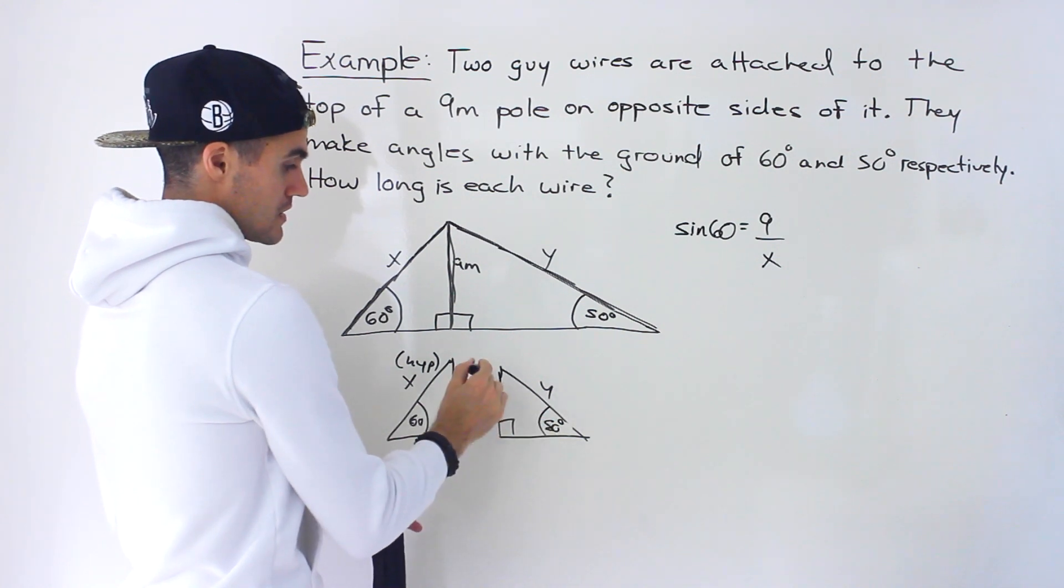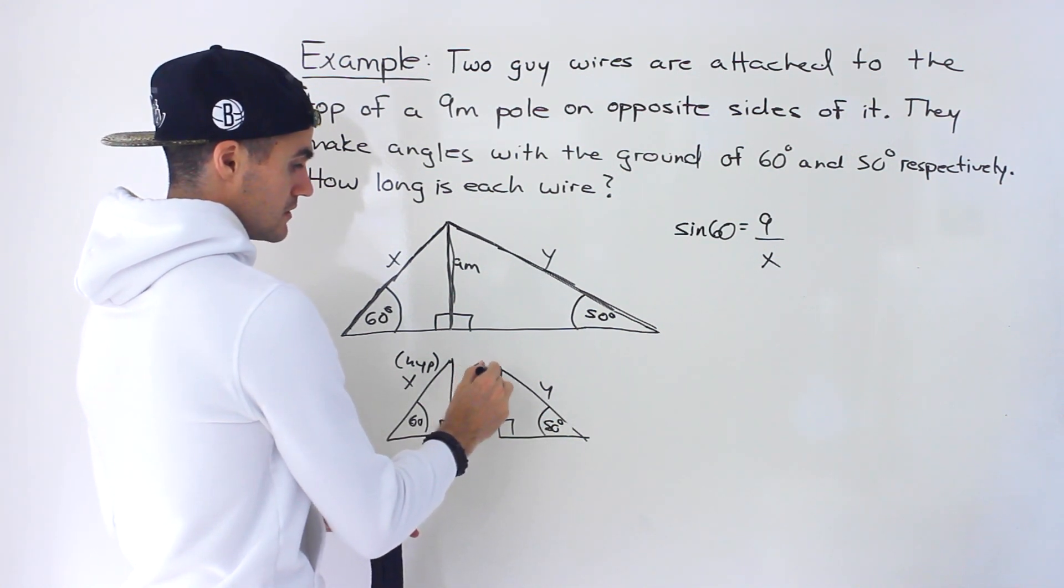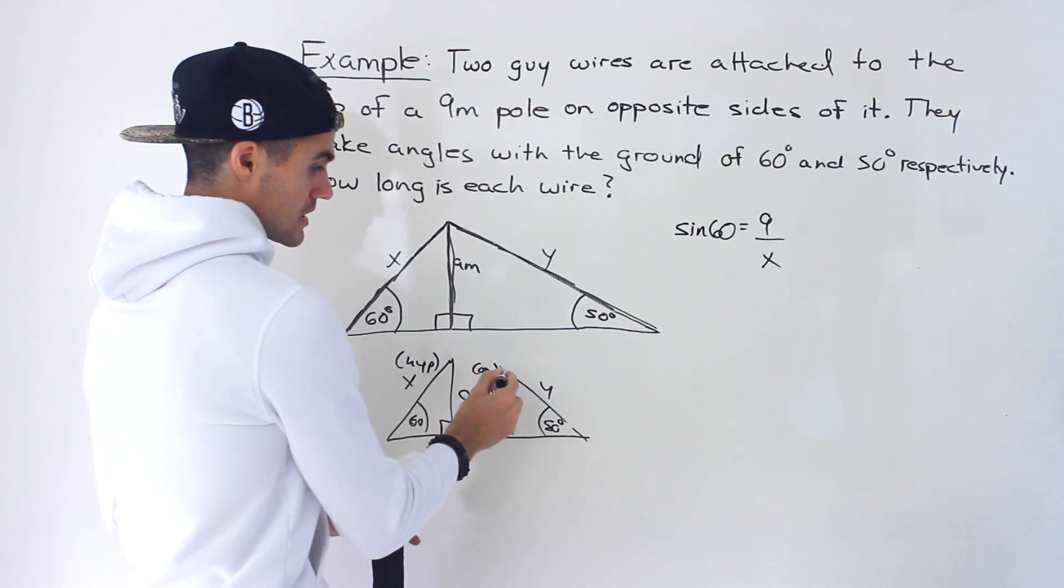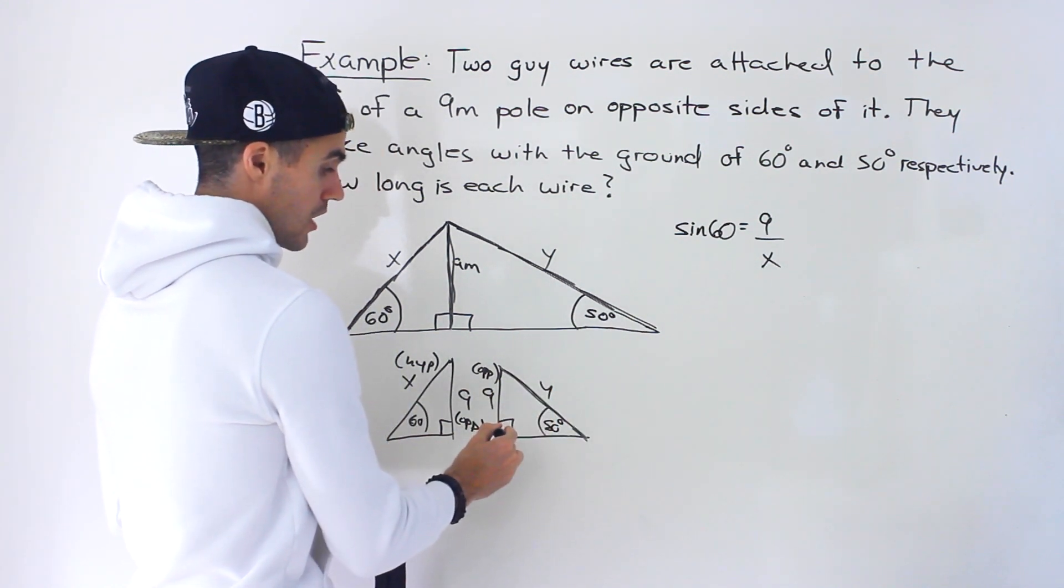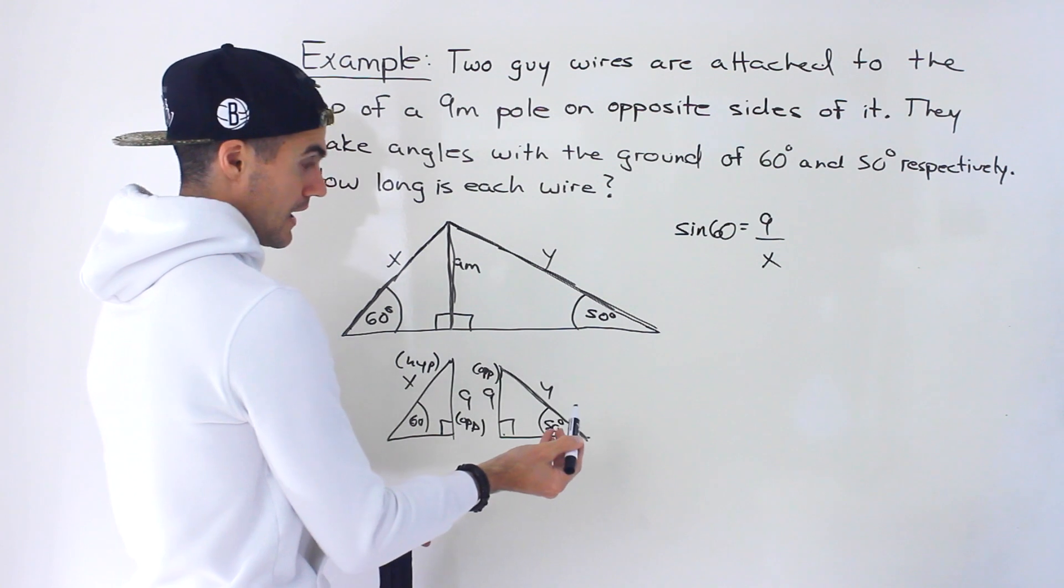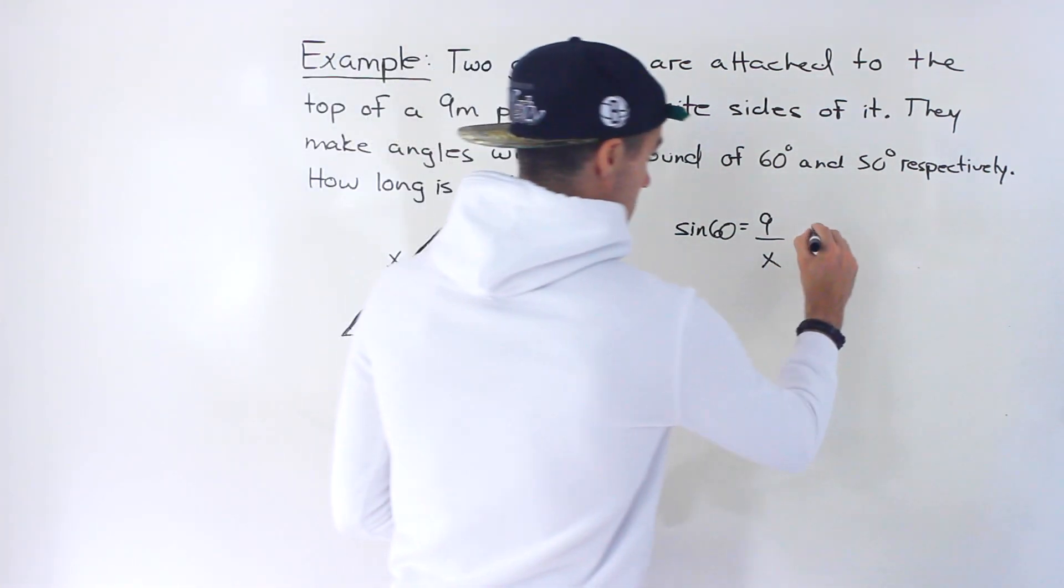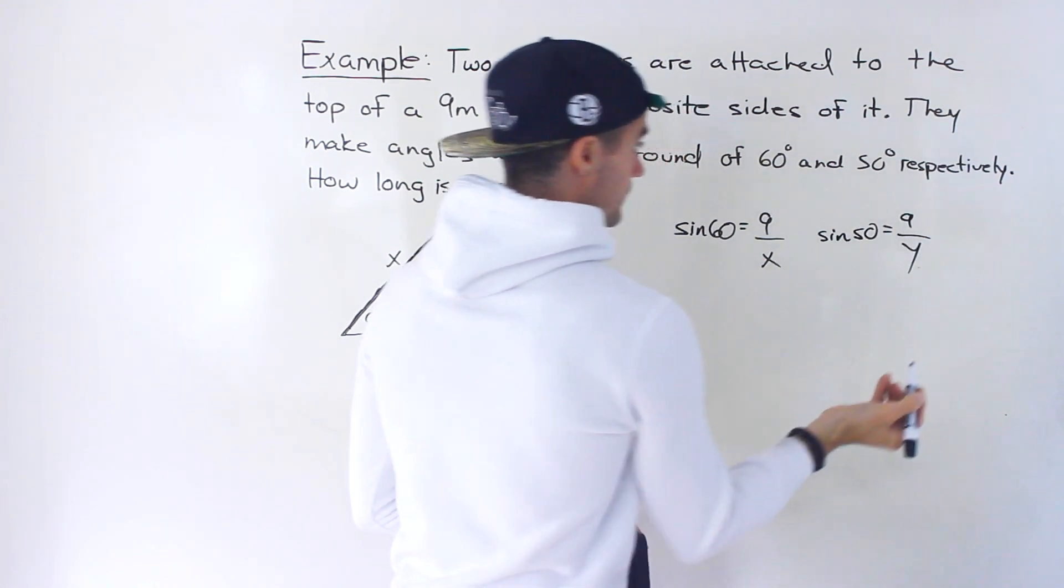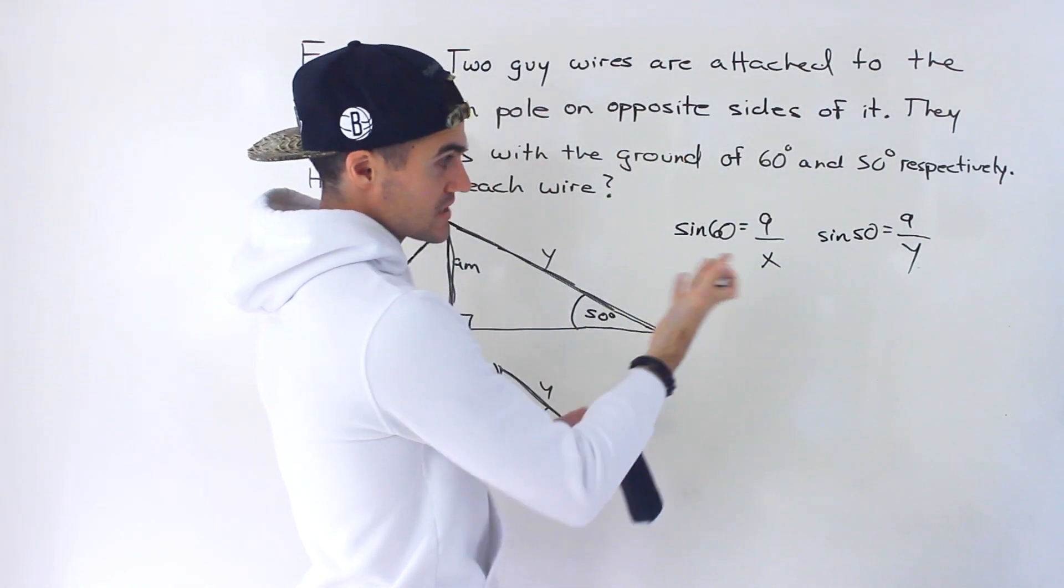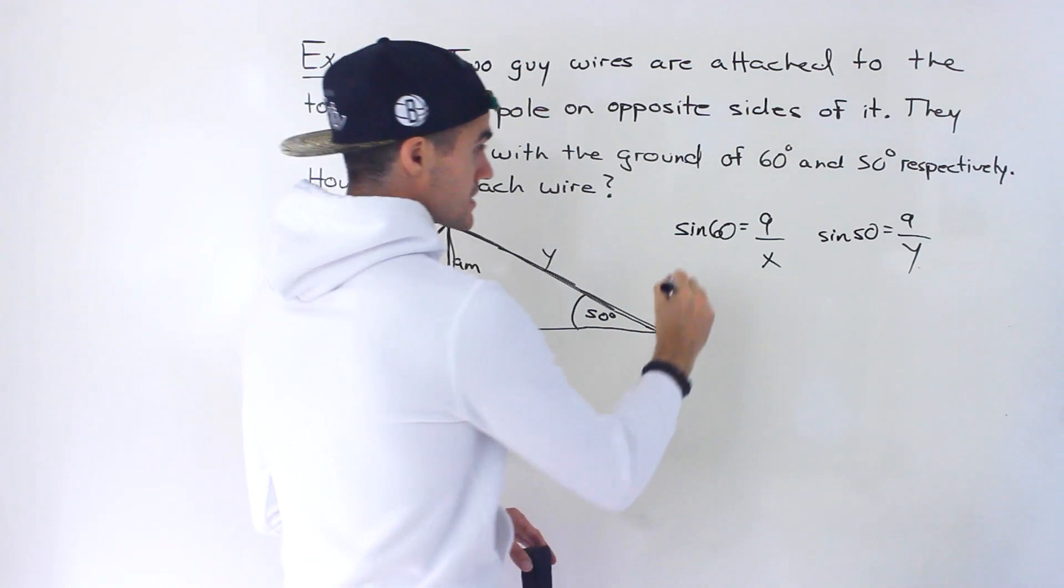And then same thing here, this 50, this is the opposite side to the 50 degrees. And this here is the hypotenuse, the Y value, which is always opposite to the 90 degree angle. And so we could say sine of 50 is equal to what? Nine over Y, like that. And so we just have two equations. We have to solve for the X and Y.